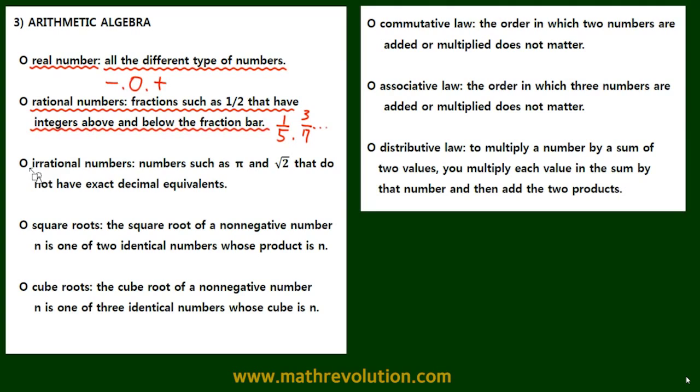Now an irrational number is numbers such as pi or the square root of 2 that don't have an exact decimal equivalent. Some other examples could be the square root of 3 or the square root of 5 and so forth.